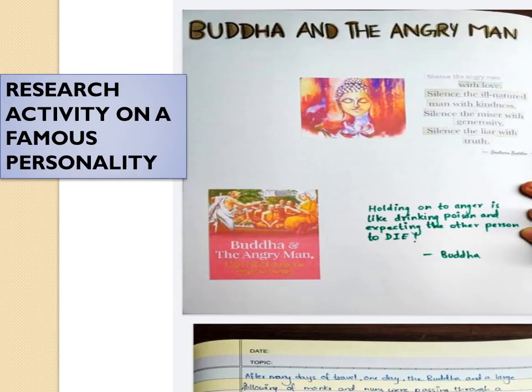This is a research activity on a famous personality. In class 9 and 10, we have stories based on great personalities like Nelson Mandela, Gautam Buddha, Albert Einstein, and Mahatma Gandhi. We can give a group or individual task to find unknown facts about these personalities. We can give different personalities to different groups, and they can deliver it as a speech, represent it as a sketch or drama, or highlight it in a PPT or presentation.